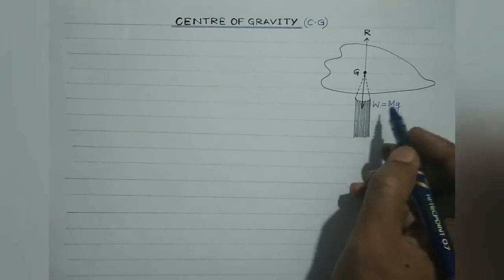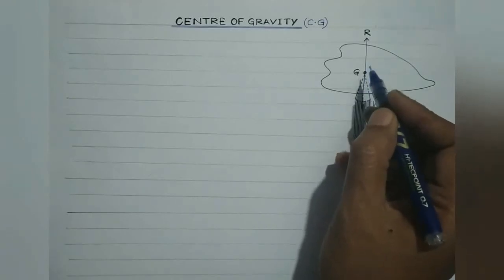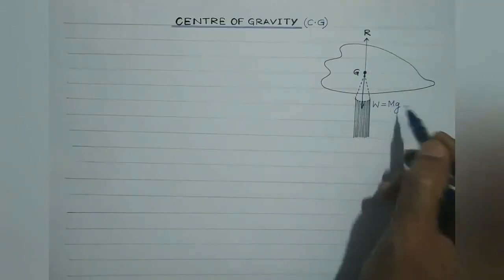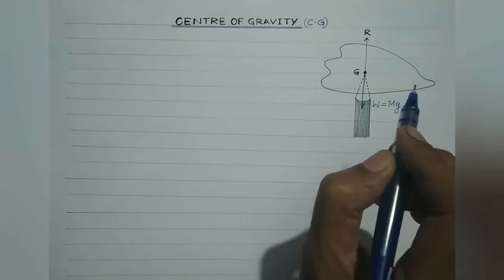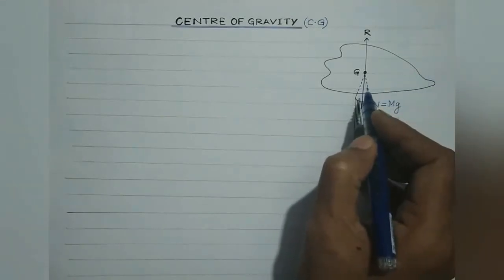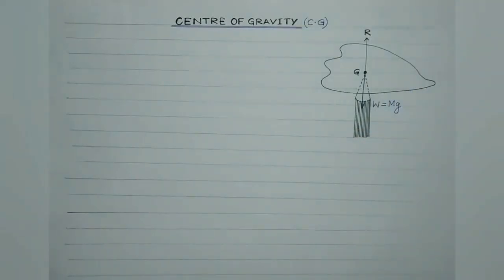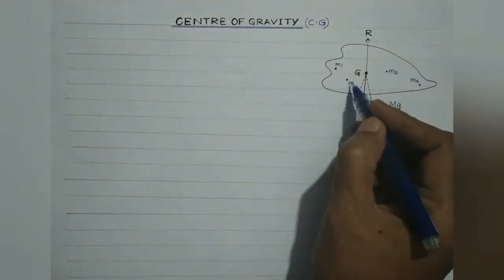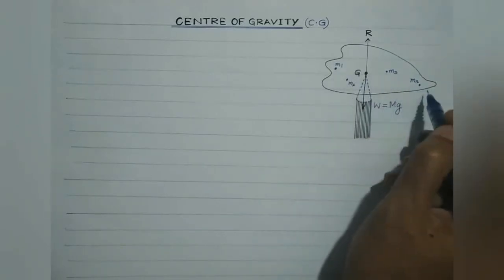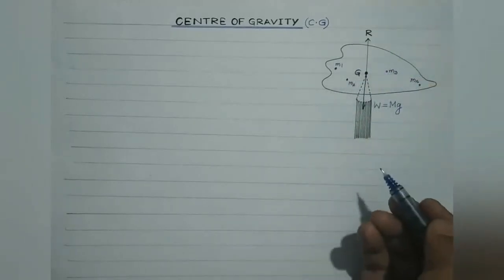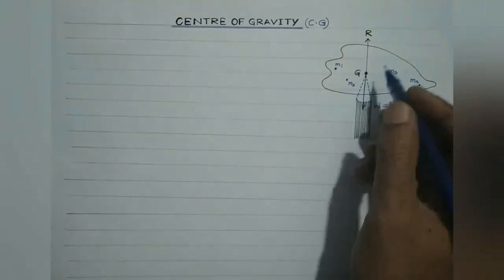The cardboard is in translational equilibrium because R equals Mg. It is also in rotational equilibrium. If it were not in rotational equilibrium, then due to unbalanced torque it would have tilted and fallen. The constituent particles of masses M1, M2, M3, and Mn are all attracted downward by the earth.